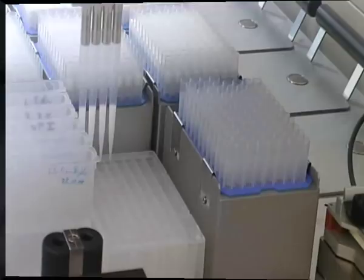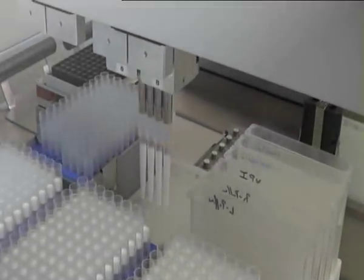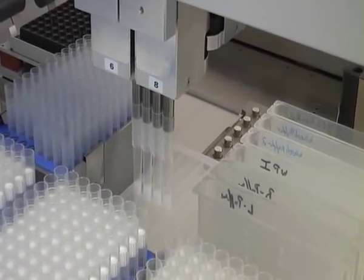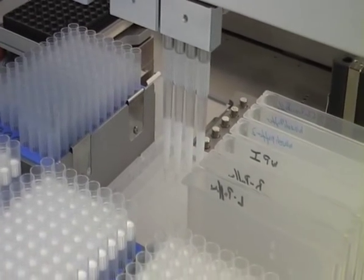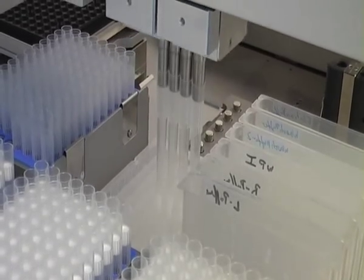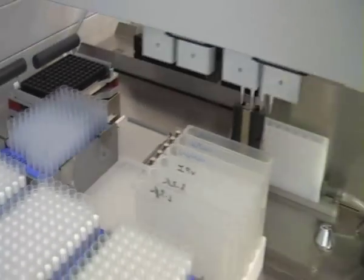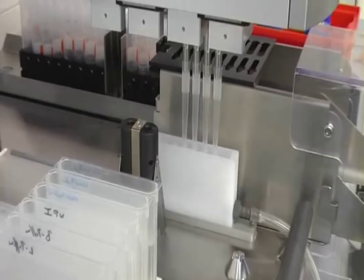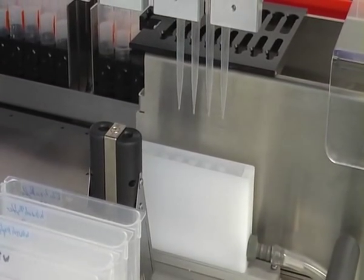Now the lysis buffer, which is contained in the Foodproof Magnetic Preparation Kit 1, is added to the wells containing the samples. Reagents that remain in the pipet tips are discarded in the liquid waste, and used tips are disposed of in the solid tip waste, which leads directly into a disposable waste bag.